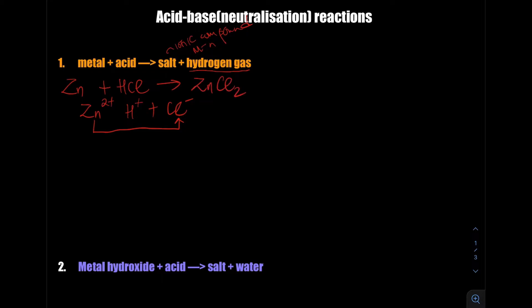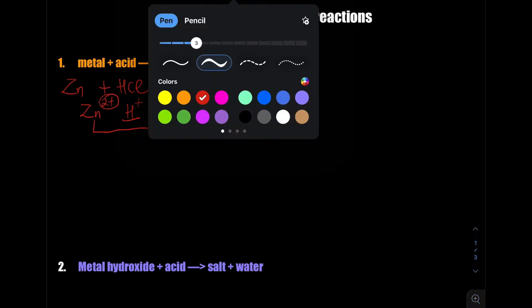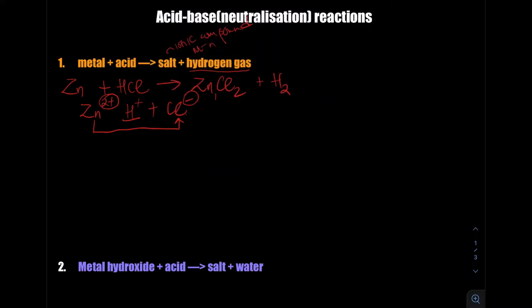The 2 in ZnCl₂ comes from the ion exchange: zinc has a 2+ charge, and chlorine has a 1− charge, so they exchange their charges. And then there will be hydrogen gas, which is diatomic all the time. Let's take a second example: aluminium reacting with nitric acid.